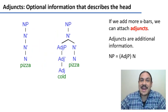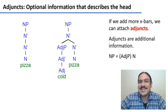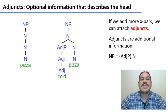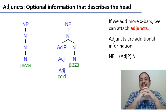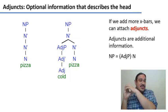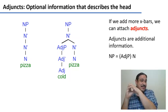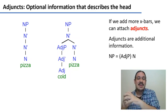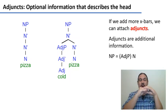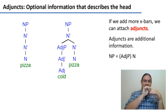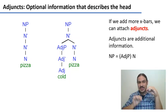Now let's study adjuncts. Adjuncts are optional information that describes the head. If you have a phrase like 'cold pizza,' 'cold' is not really necessary to understand what a pizza is, but it provides additional information about this particular kind of pizza. We're going to call this an adjunct — something that is optional and that gives you more information about the head.